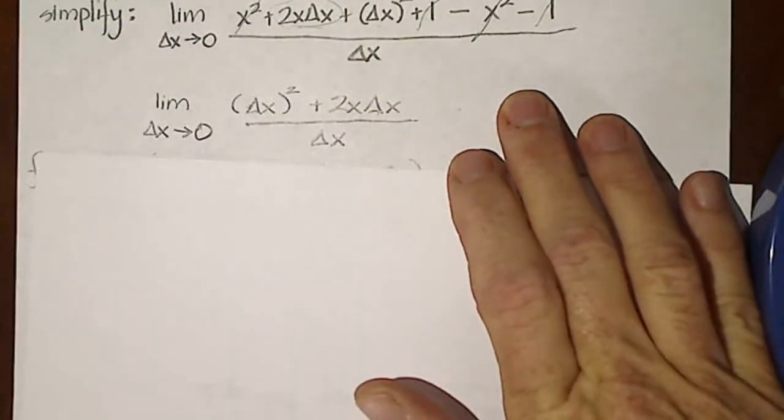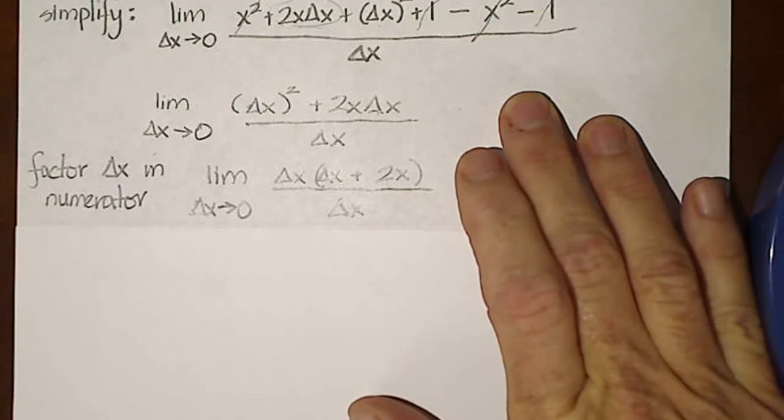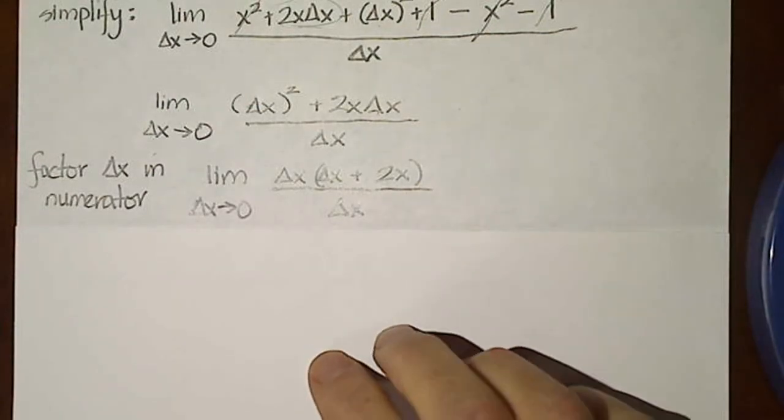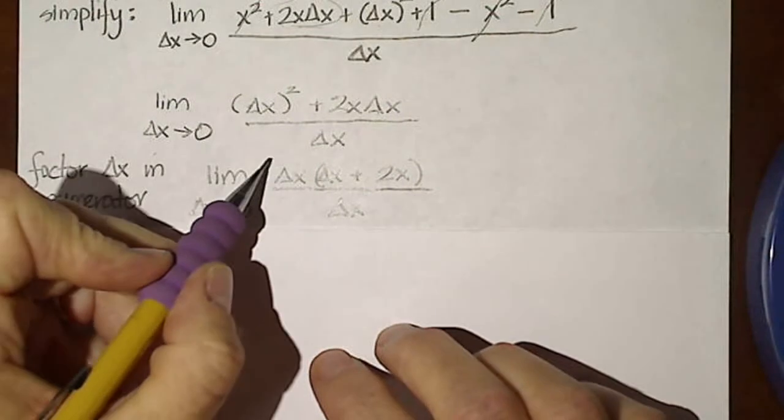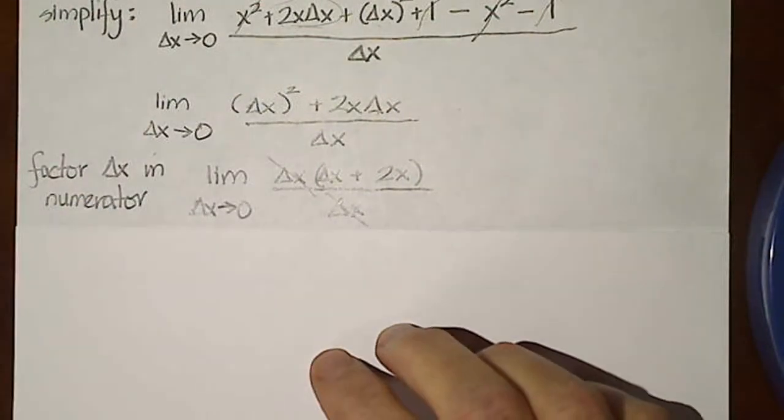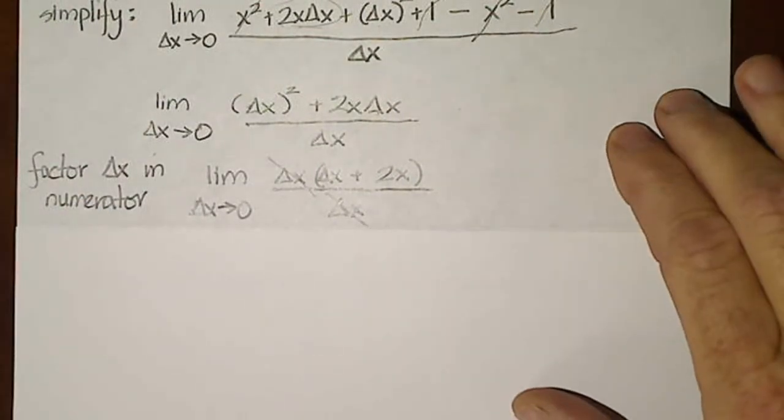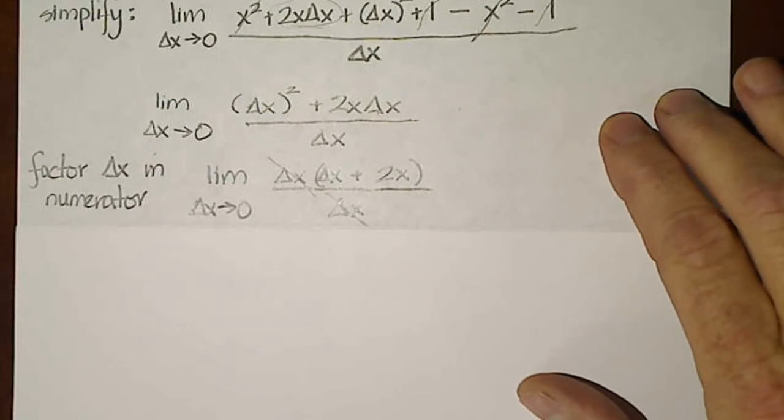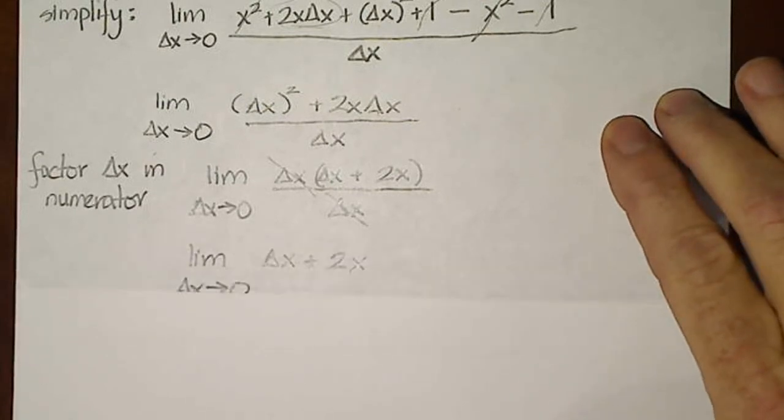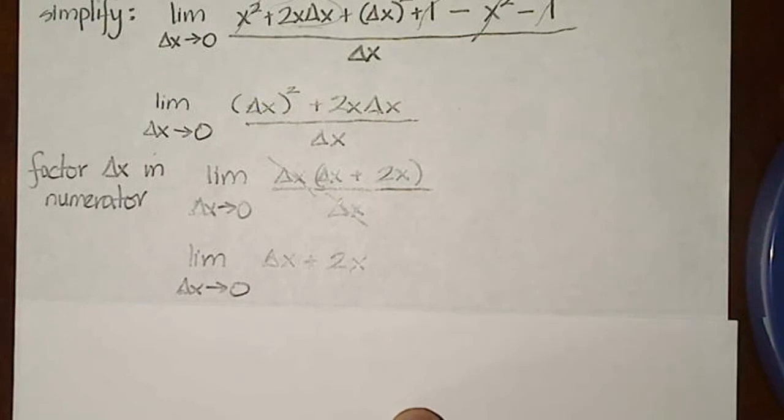So that's exactly what I'm going to do. I factor the delta x out of the numerator, and I see that sure enough, I cancel away numerator to denominator—always factor before you cancel—and I'm left with the limit as delta x goes to zero of delta x plus 2x.